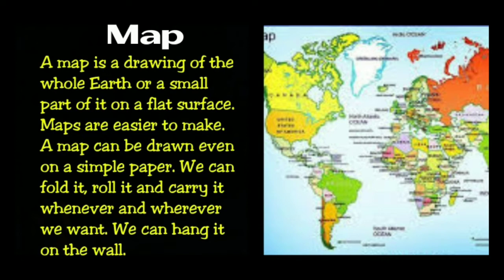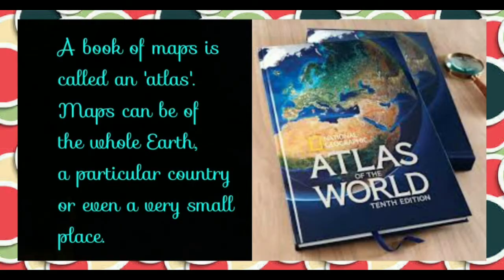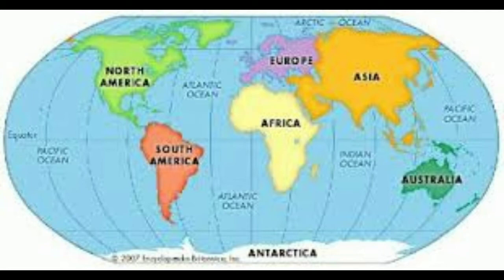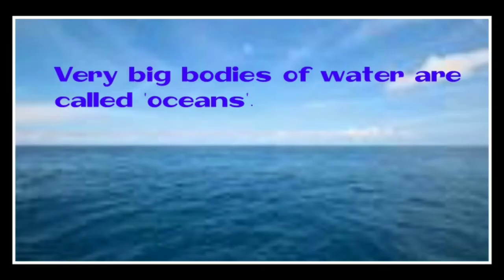We can draw a map on simple paper and easily fold it, roll it, and carry it to different places. A book of maps is called an atlas. Maps can be of the whole Earth, a particular country, or even a very small place. Look at the world map in the next slide, showing oceans and continents.